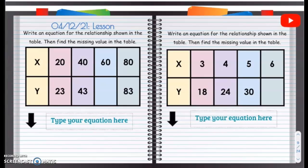Alright, our lesson. So we're going to write an equation for the relationship shown in the table, and then we're going to find the missing value in the table. So what we're going to take a look at is how do we get from x to y? So how do we get from x to y? Well, if I start with x and I get to y, let's take a look. Well, how do I get from 20 to 23?